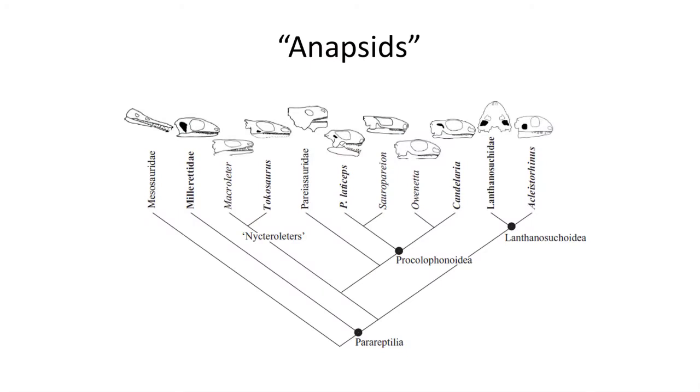These anapsid reptiles are much more complex and diverse than most textbooks make them out to be. The skull diversity demonstrates several groups that open up the sides of the skull, so often they are not strictly anapsid reptiles, but a unique paraphyletic group of reptiles which demonstrate an early diversity of forms during the Permian period. Thus in recognizing this diverse group, we can't necessarily use a single character — such as the absence of the temporal fenestra — to categorize all of the members.